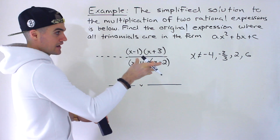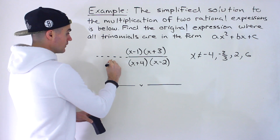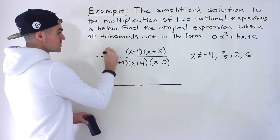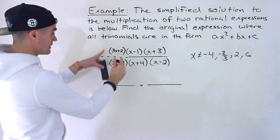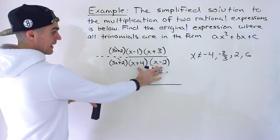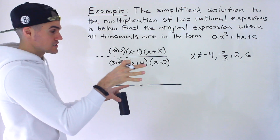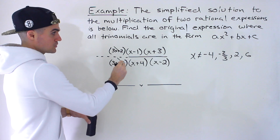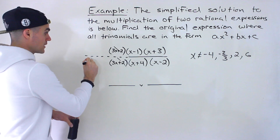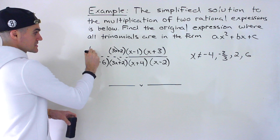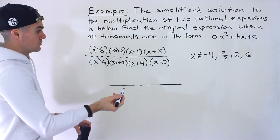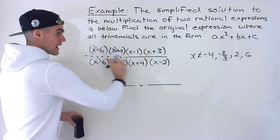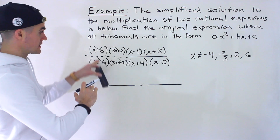X can't be negative 2 over 3 — what factor would that come from? That would come from the factor 3x plus 2. But it's not in the denominator anymore, meaning that factor was also in the numerator and they canceled out. Remember, we get the restrictions before we cancel things out. Similarly, x can't be 6 must have come from another factor that was canceled out — and the restriction still came from those factors that were in the denominator before we simplified.